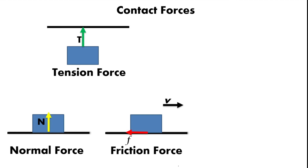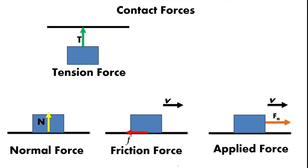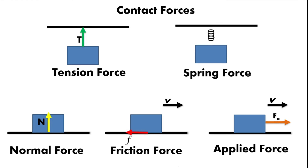Another contact force is the applied force, sometimes exerted by a human. Usually, if there is only an applied force, it causes the object to accelerate in the direction of the net force. Lastly, there is the spring force, which is a force exerted by a spring. Friction and spring force both depend on conditions — friction depends on the type of surface, while spring force depends on the stiffness of the spring. We will discuss these further in the next topic.